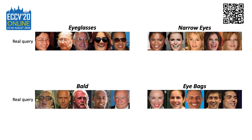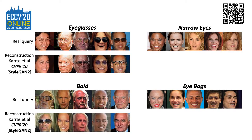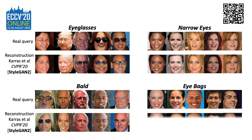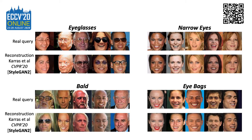Some attributes are typically associated with a certain subgroup — for example, eyeglasses more likely for senior people, and bald for males. If we look at reconstructions from a well-trained generator to see its capability to generate such attributes, sometimes the results do not reflect those appearances correctly. Here are more failure cases of the state-of-the-art GAN technique for finer attributes like narrow eyes and eye bags. This is so-called mode collapse: certain attributes are poorly memorized and generated by a well-trained generator, while such attributes may be highly correlated with a certain subgroup of population.